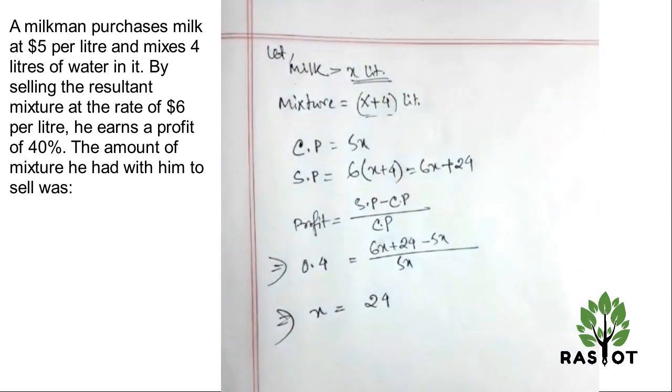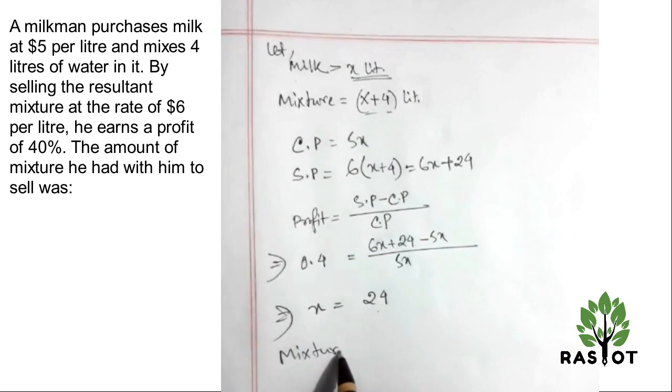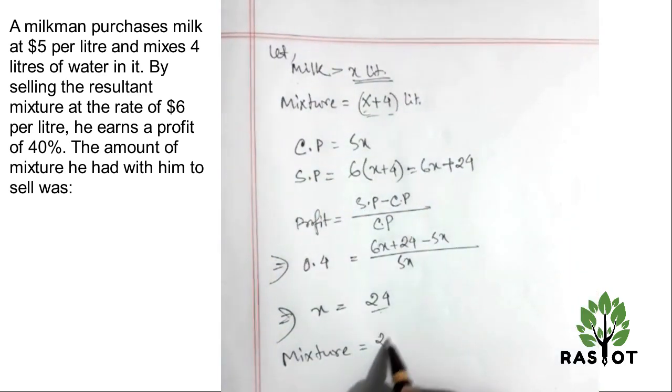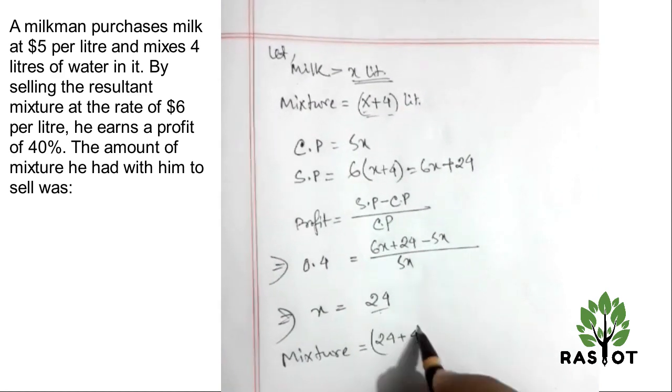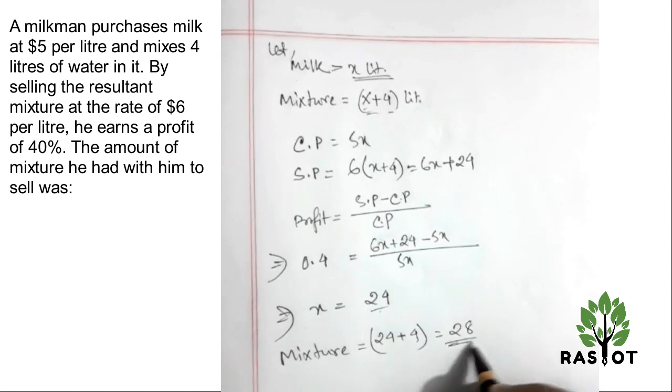Initially it was 24 liters of milk, then he added 4 liters of water. So ultimately the mixture he had was 28 liters total.